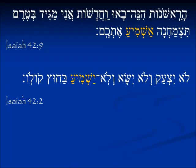In Isaiah 42:2 we see the third person singular, speaking of the servant of the Lord: lo yitzak — he will not cry out; lo yissa — he will not raise up, indicating his voice; lo yashmia bachutz kolo — he will not cause his voice to be heard outside, or generally in the street.